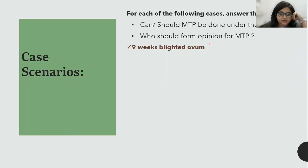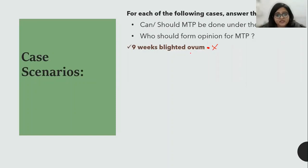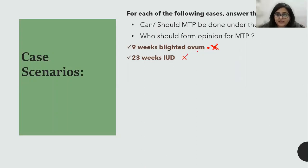A blighted ovum won't come under the MTP Act — you would anyway do a termination for such a patient, but it doesn't fall under the MTP Act's purview because the fetus is non-viable. Missed abortions, incomplete abortions, and fetal demise also do not come under the MTP Act. Similarly, 23 weeks IUD also does not apply because it is not a viable fetus.